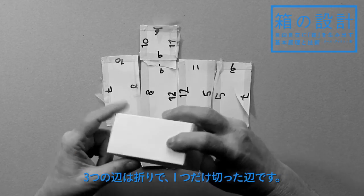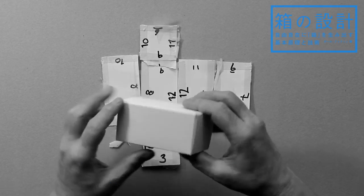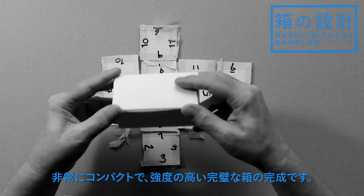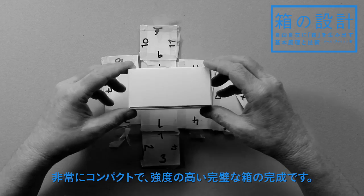So one, two, three, and the fourth one is cut. So it's a very compact, strong, perfect box. You cannot make it better than that.